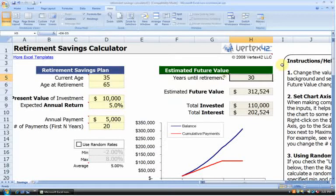And you can see that our estimated future value of our plan, based on all those assumptions, is going to be $312,000. Not bad at all.